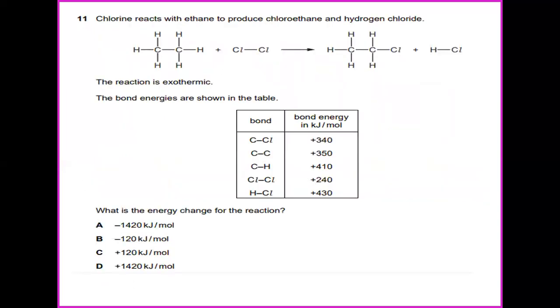Chlorine reacts with ethane to produce chloroethane and hydrogen chloride. The reaction is exothermic and the bond energies are shown in the table below. What is the energy change for this reaction? In this case, to get the energy change is energy in minus energy out. From this formula, the value is actually 410 plus Cl bonding chlorine, you get 240.